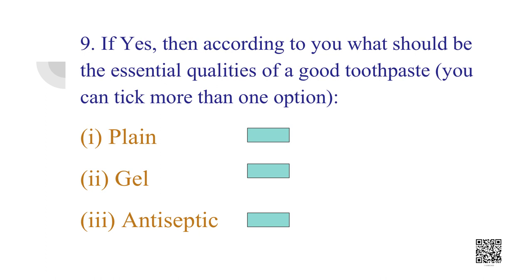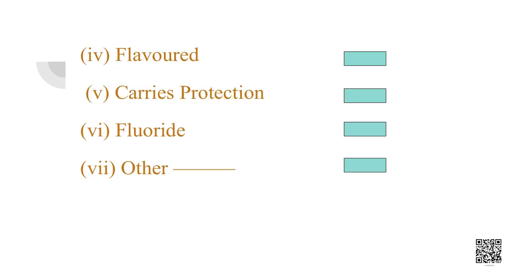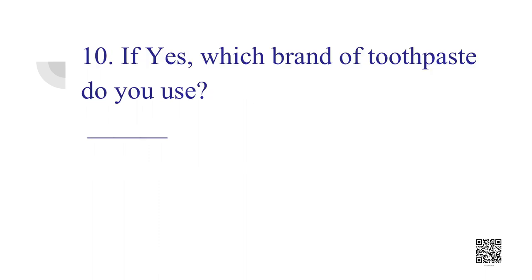Then we can ask: if you actually use a toothpaste, what should be the essential qualities of a good toothpaste? You can take more than one option because some people might like gel-based toothpaste, some might like toothpaste with chlorine, etc. Options include plain toothpaste, gel-based, flavored, with protection, with fluorine, or others to be specified. They can also specify the brand on which they trust.